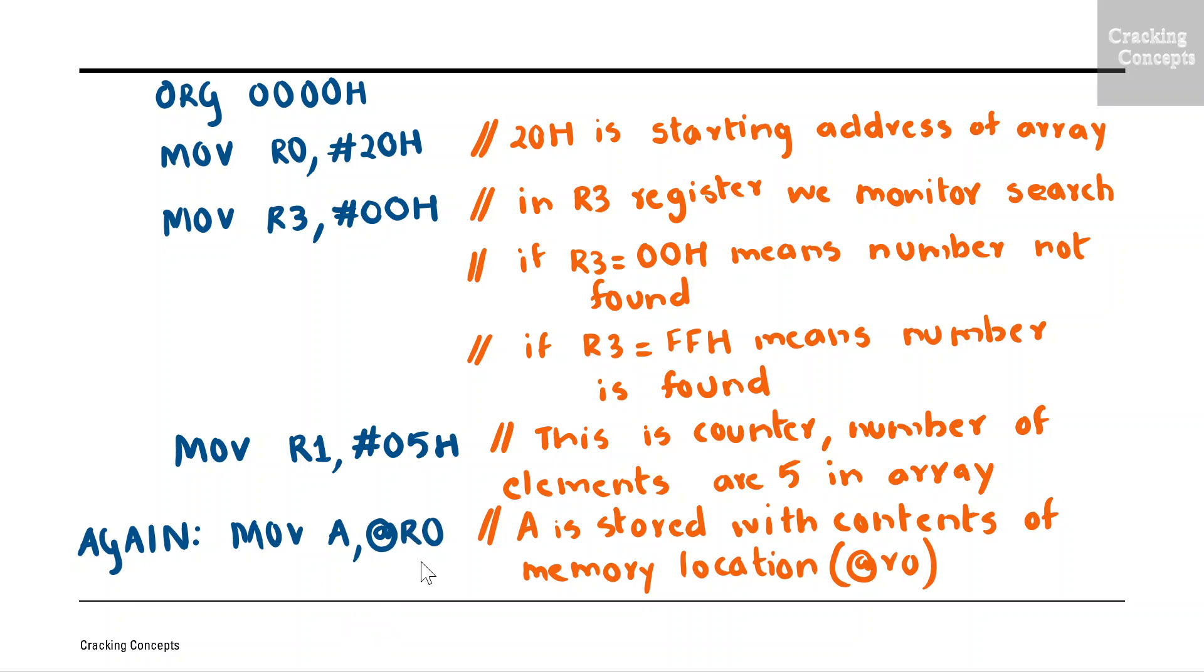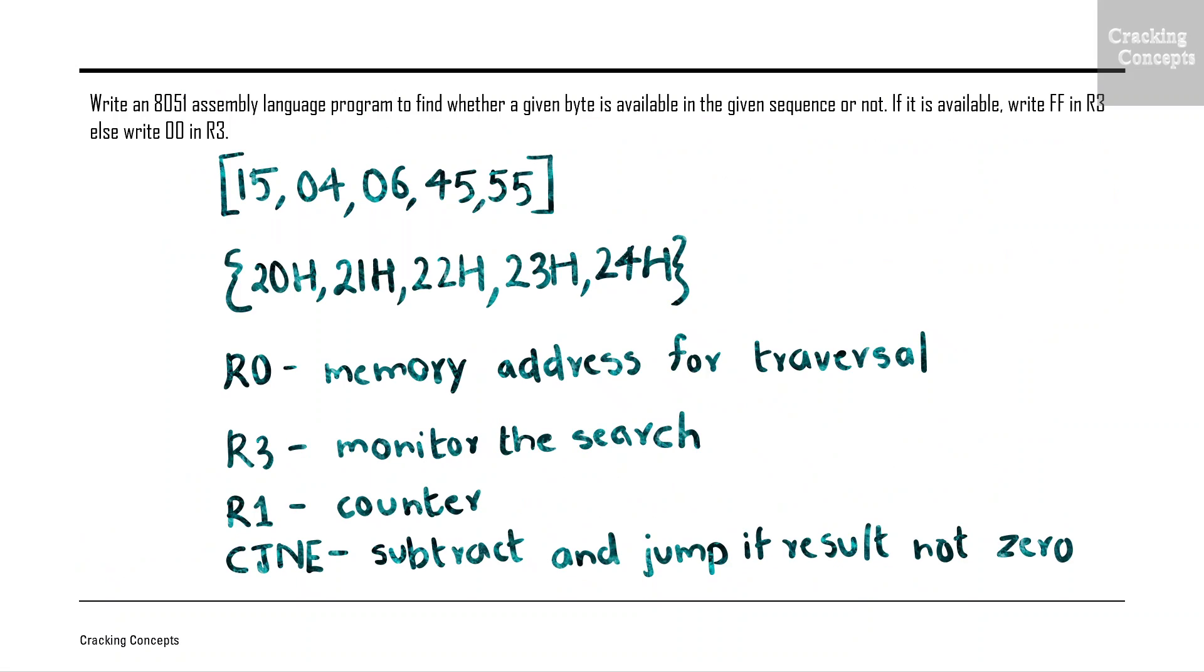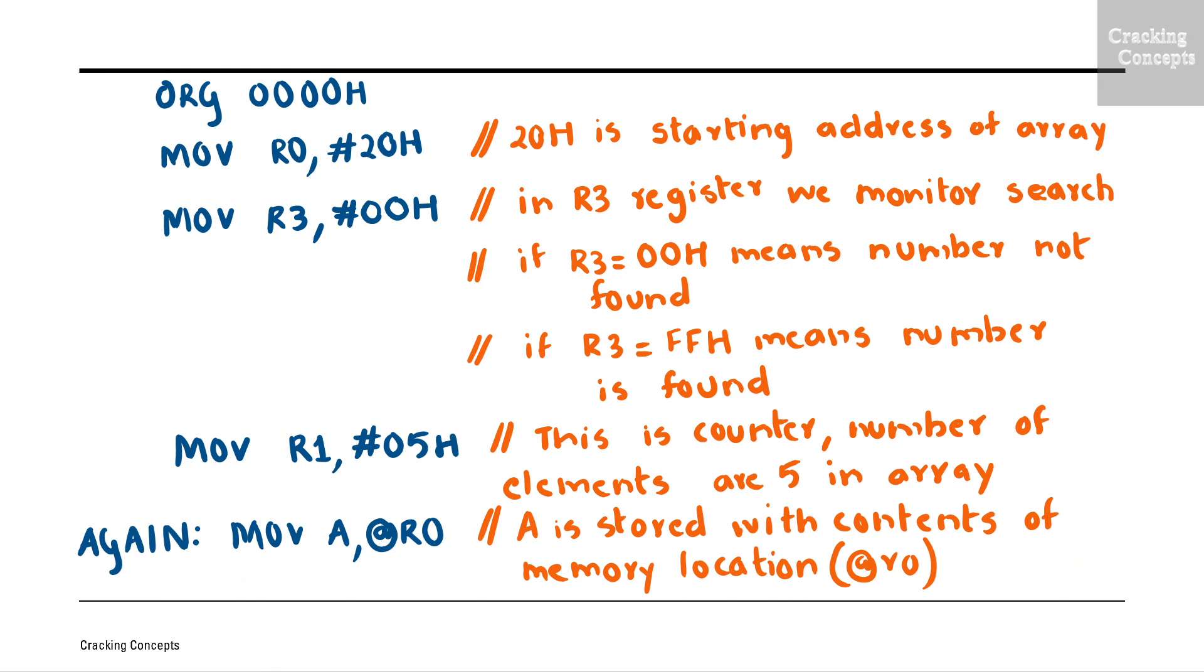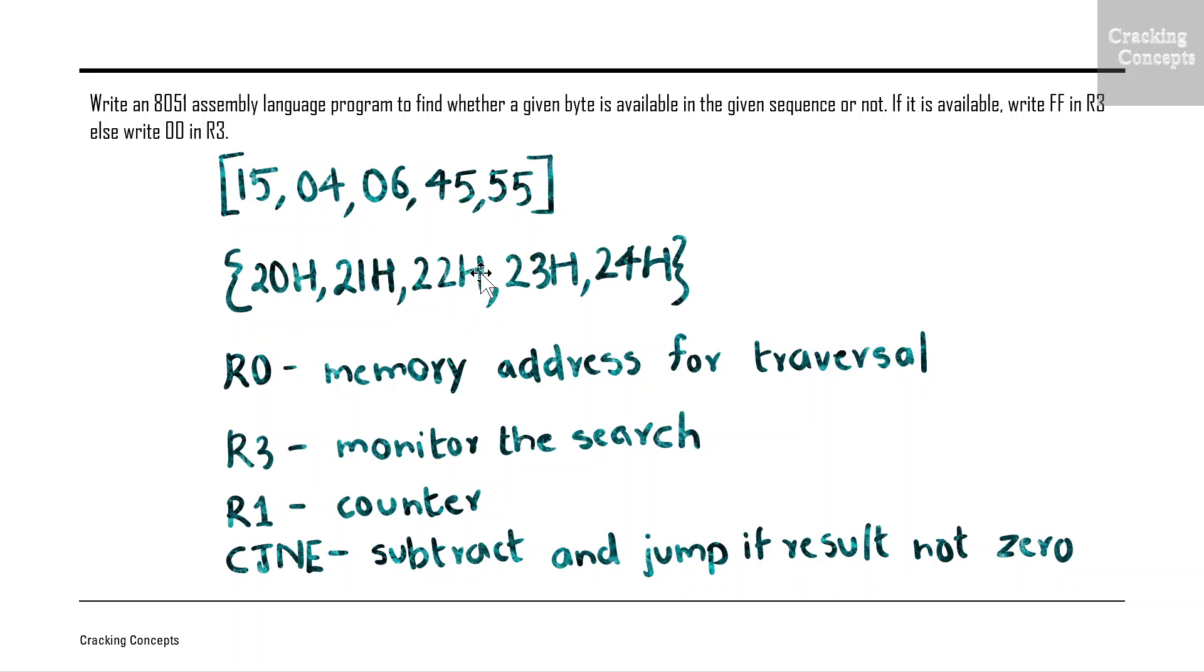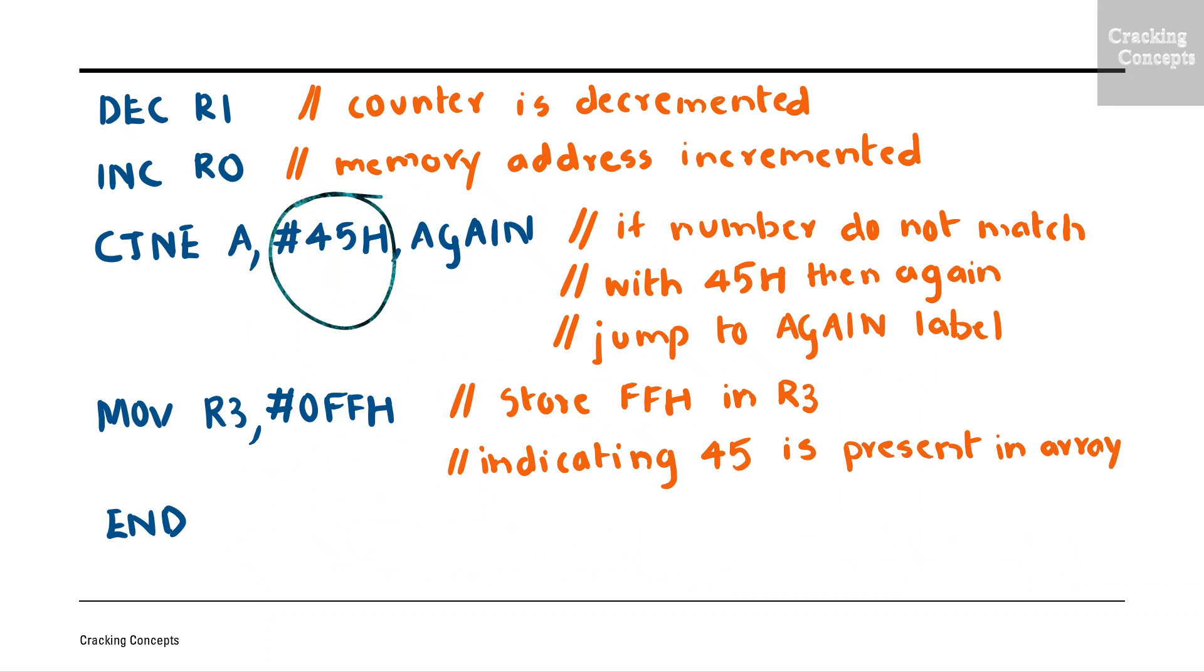Next we will access the value at R0. Now R0 is pointing to 21H, so at the rate R0 will give us the value 4. 4 is copied to the accumulator. We will decrease the value of R1, now R1 will be 3, and increment the value of R0. Now R0 will point to 22H. Next we will perform the comparison between the value at A which is 4 and 45. On subtraction they don't give us zero. Again the control is transferred to the label AGAIN.